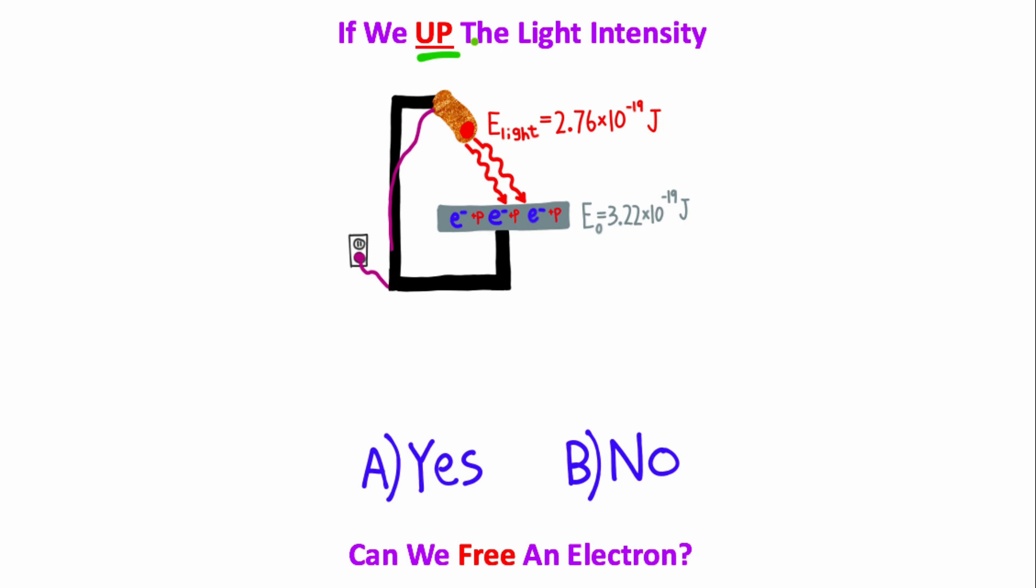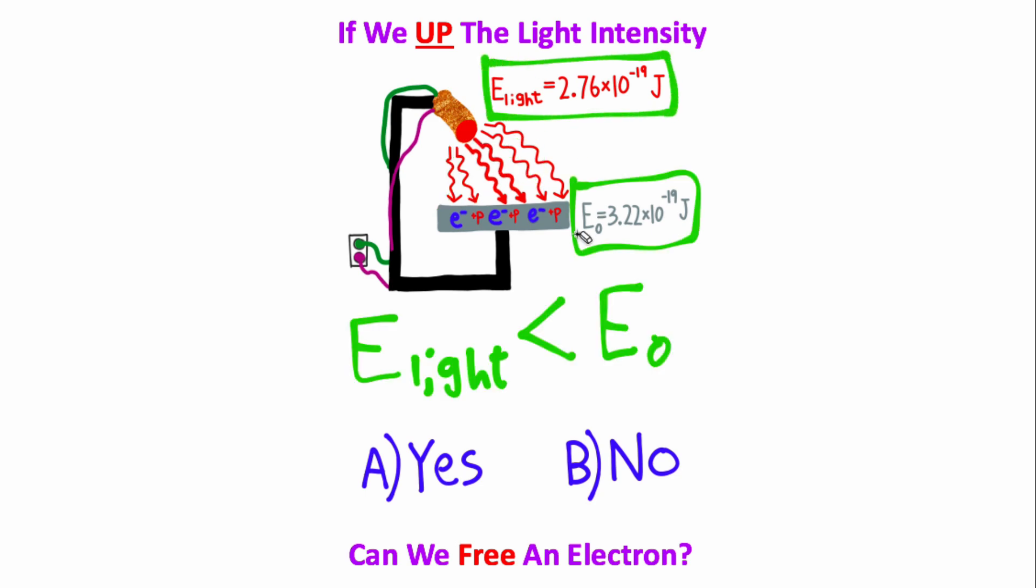This question is asking, if we up the intensity of light, can we free an electron? Quantum mechanics says that the light being fired at this surface is delivering all of its energy in little wave packets known as photons. And if we were to increase the intensity of light, all we would do is shine more photons onto this surface. Notice how even with more photons being fired at the surface, each photon still has an insufficient amount of energy. So that means even with a greater intensity of light, we still will not be able to free any electrons off this metallic surface. So the answer to this question is no.